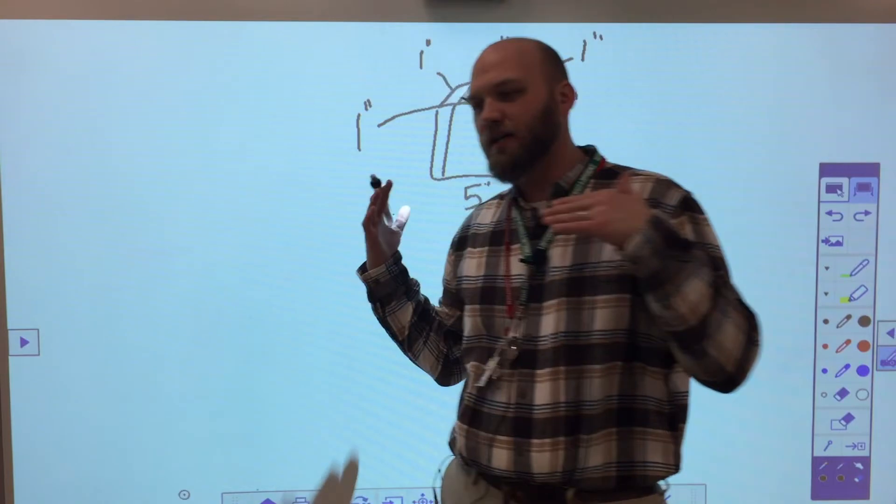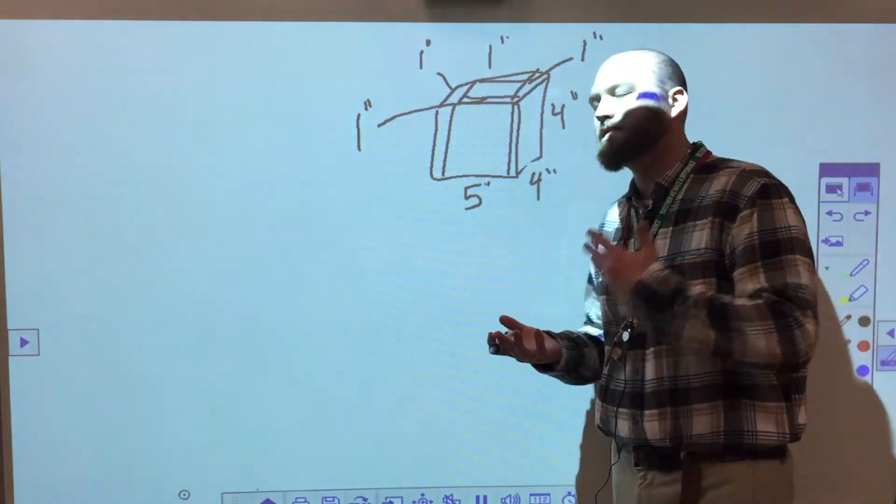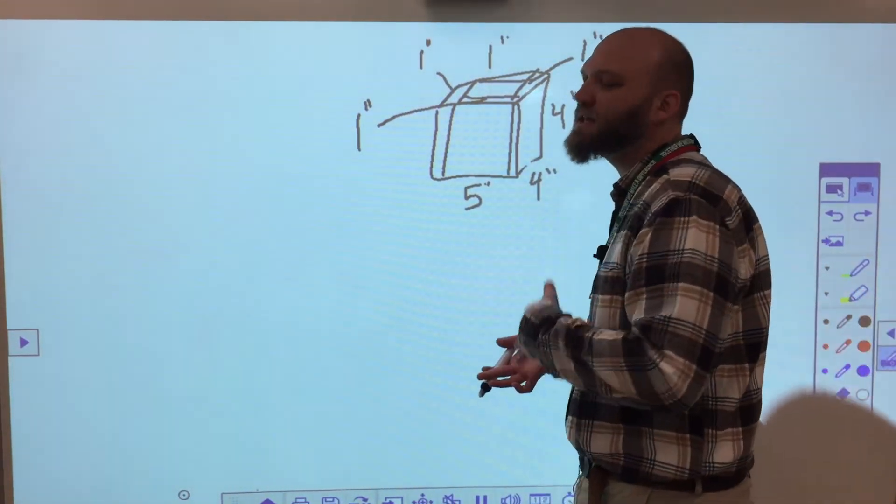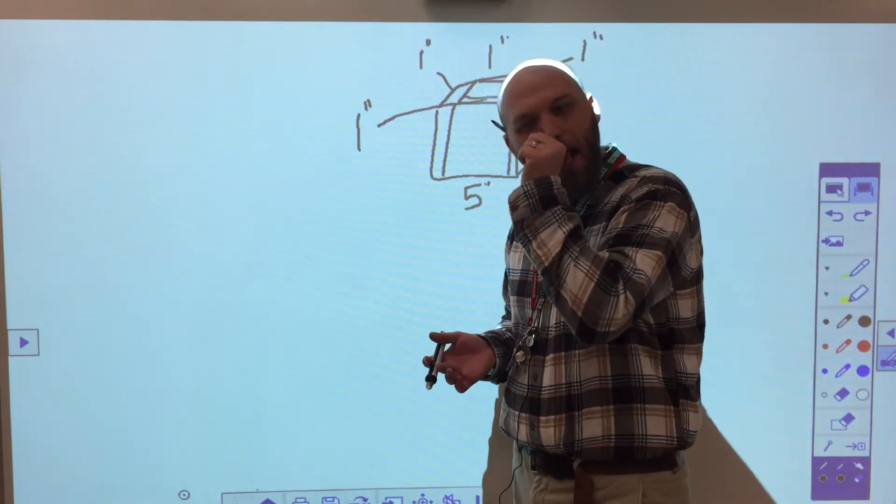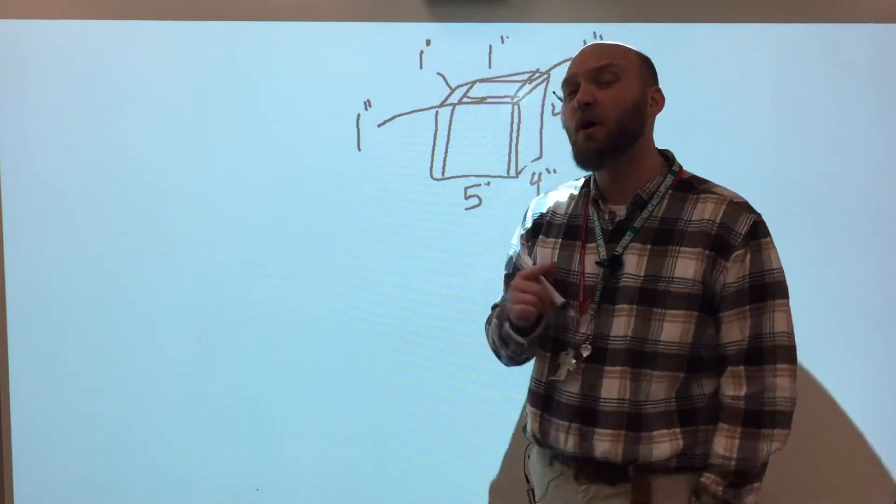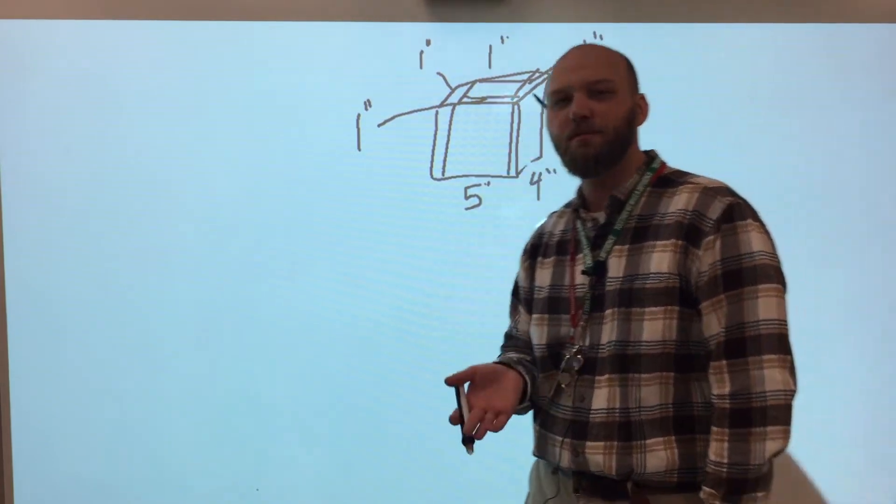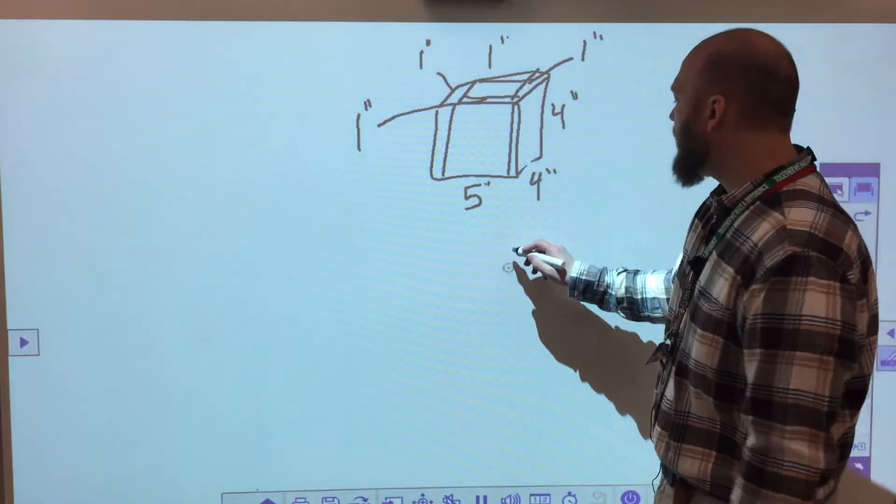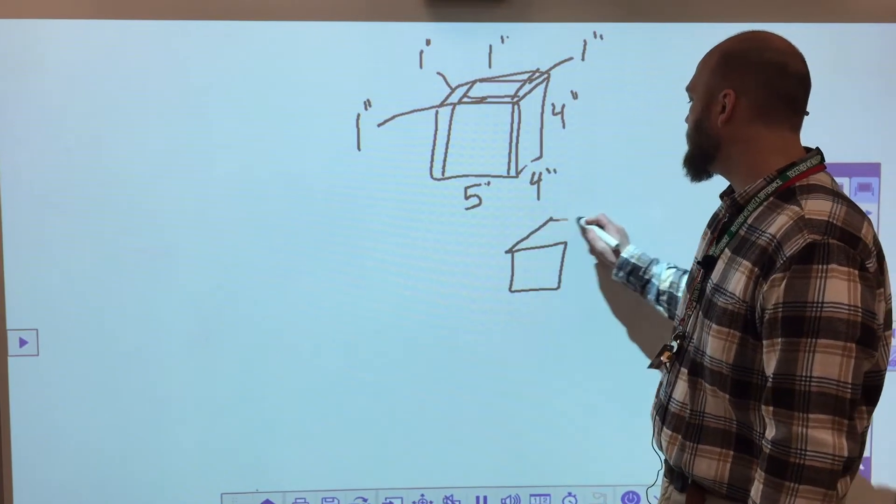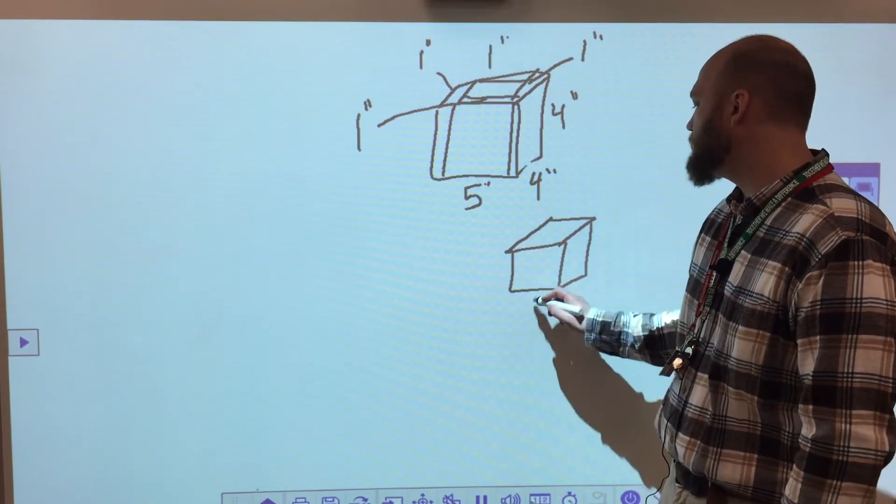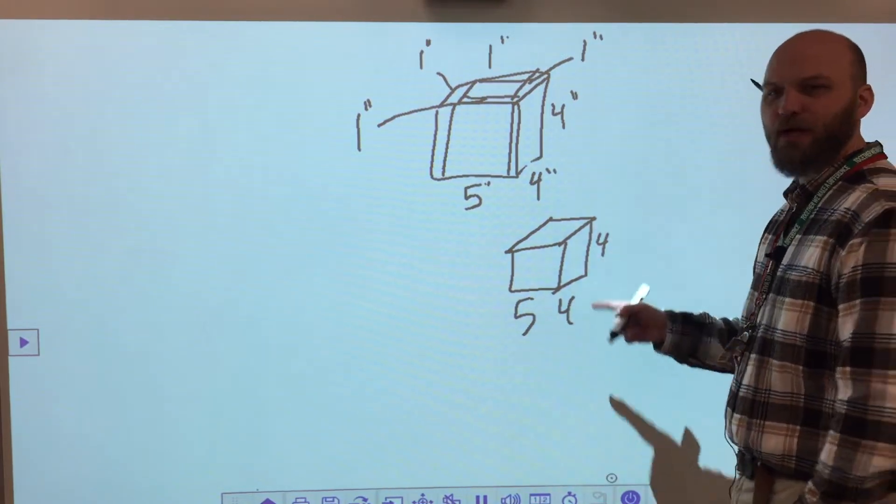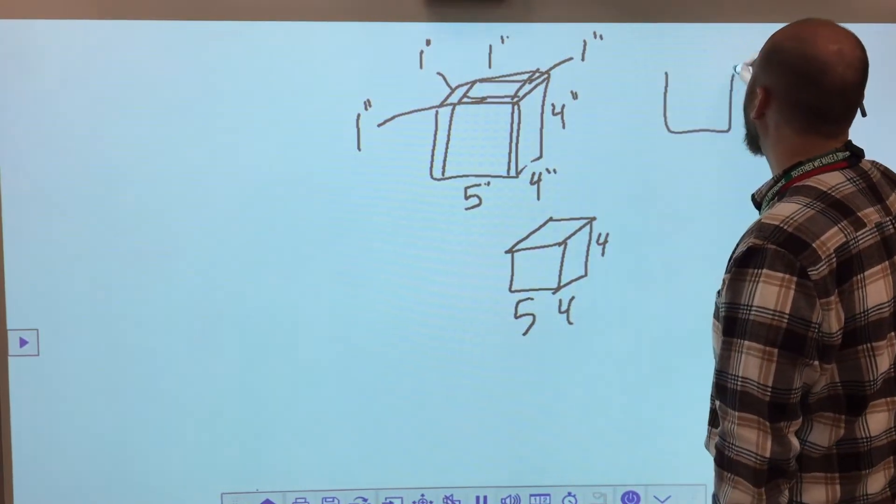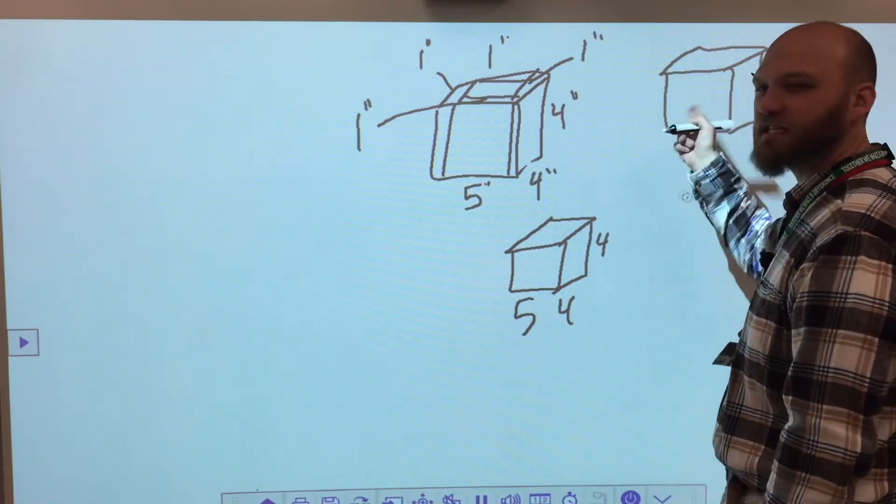Certainly I could find the larger volume, and I could find the smaller volume, and then I could subtract them, but that's going to give me the volume of the space in between those two objects. So I want to know the volume of the smaller object. I have to use the big object as a reference. So I always recommend drawing yourself two shapes. 5, 4, and 4. So there's my original. 5, 4, and 4. Let's look at our new one.